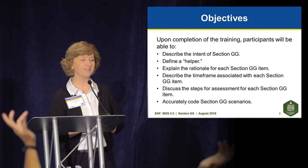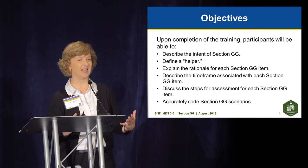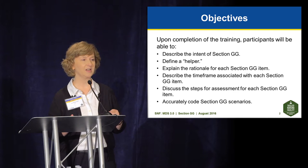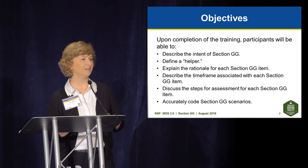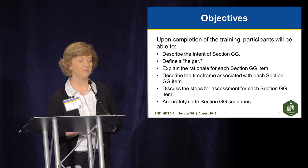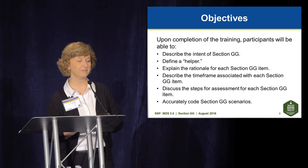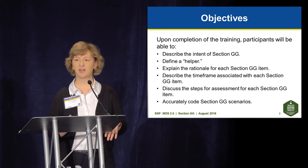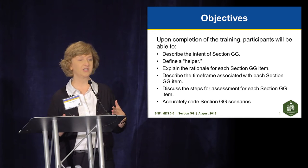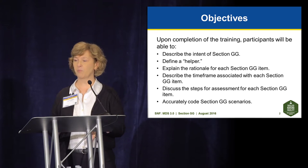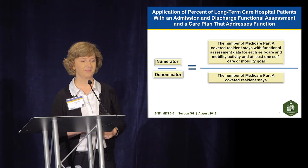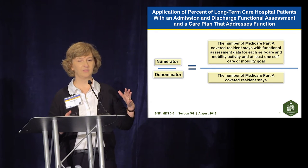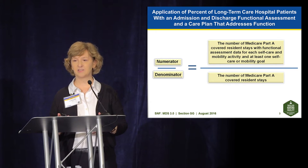In terms of objectives, we will be talking about the intent of Section GG — it's all about self-care and mobility. We will define helper, talk about the rationale for each item within Section GG, describe the timeframe associated with those items, and discuss the steps for assessment for each item. We'll go through scenarios similar to what Jen and Sharon did earlier today, with polling opportunities, so get your clickers ready.